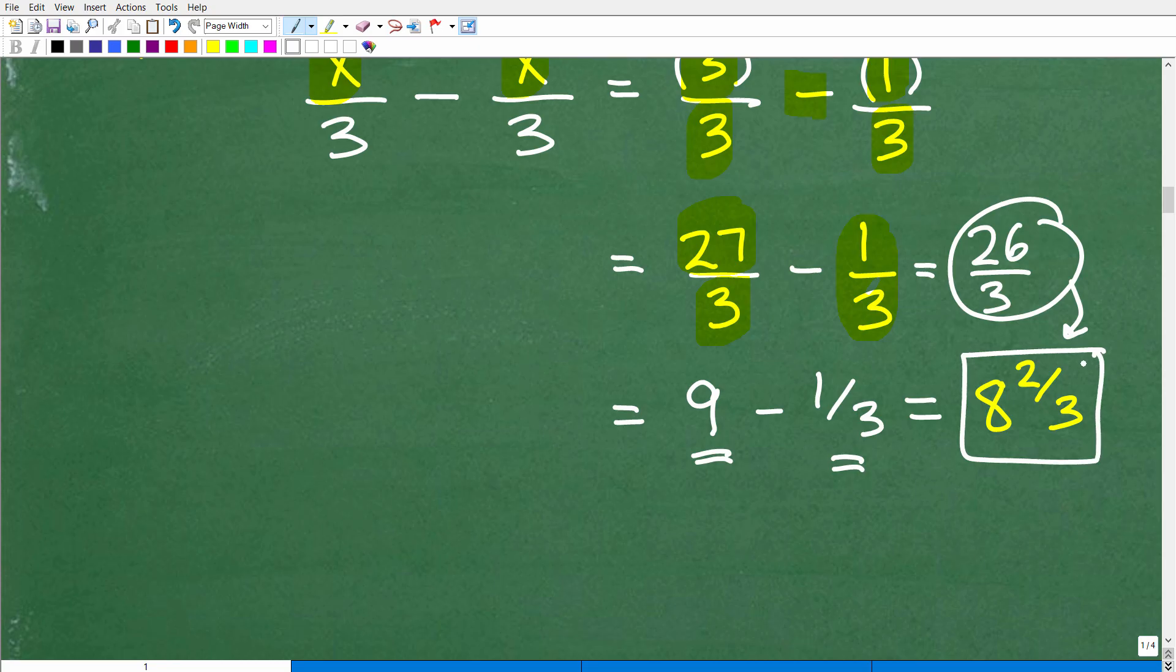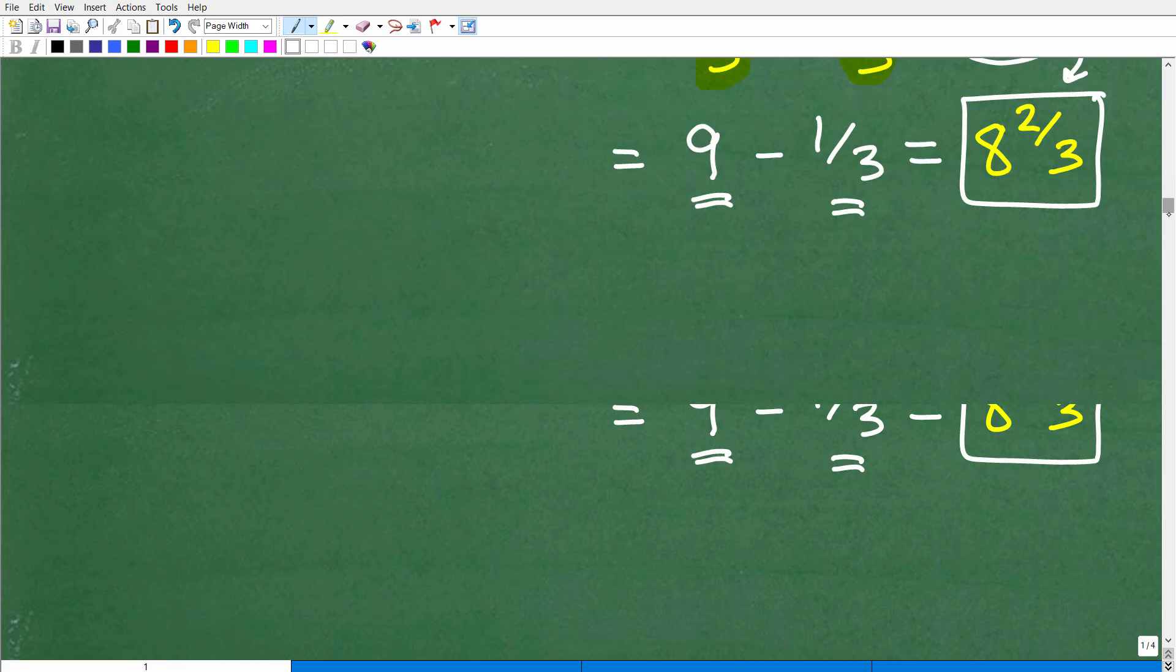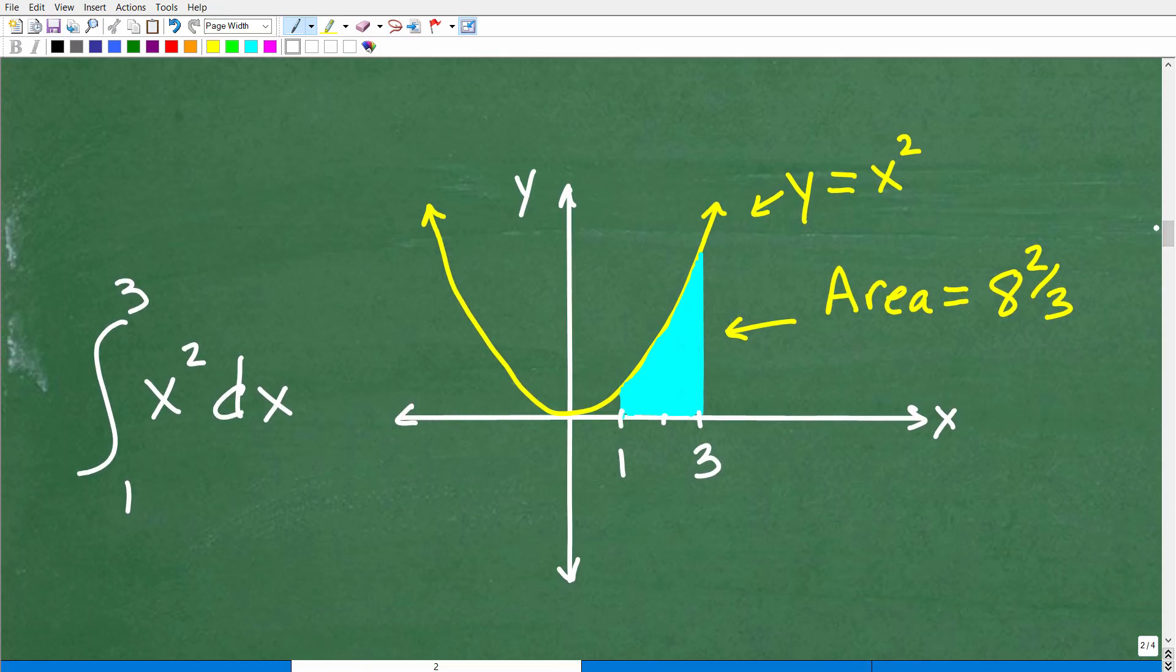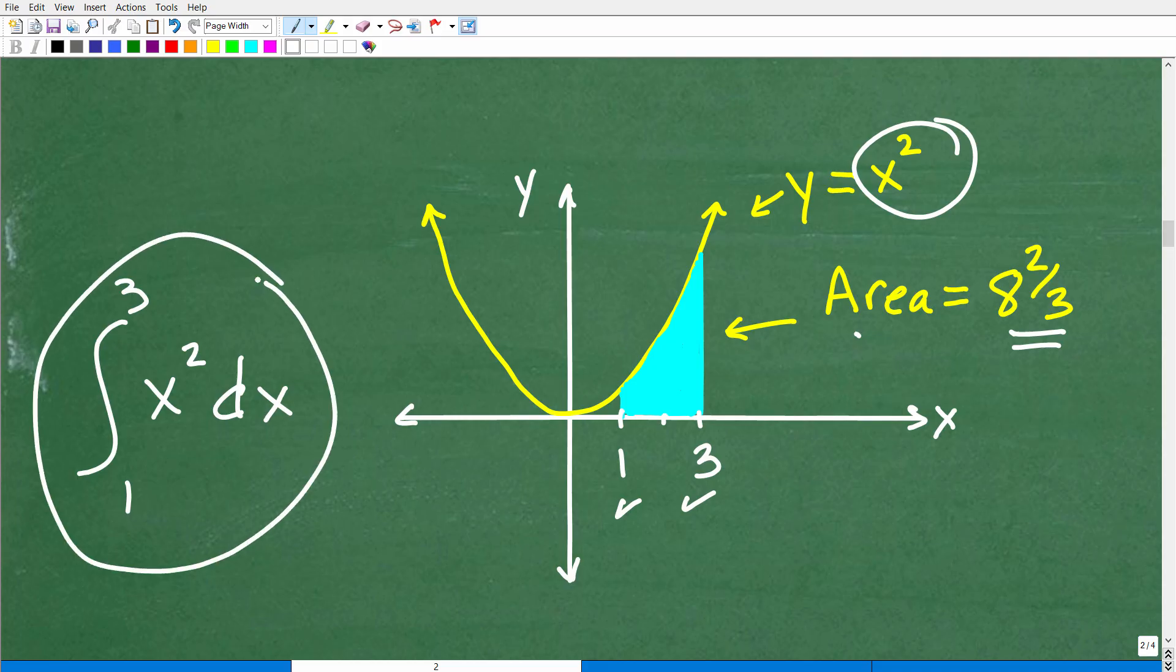Guess what? We are done. Okay, and hopefully you didn't think that was too painful. Okay, and what are we saying here? Well, the answer is 8 and 2 thirds, meaning the area of this blue shaded region between 1 and 3 underneath this curve x squared is 8 and 2 thirds units.